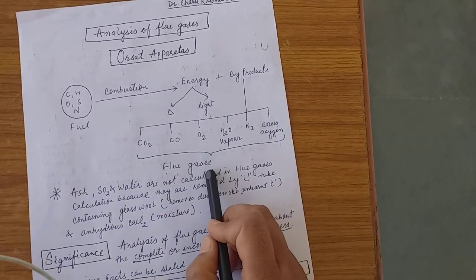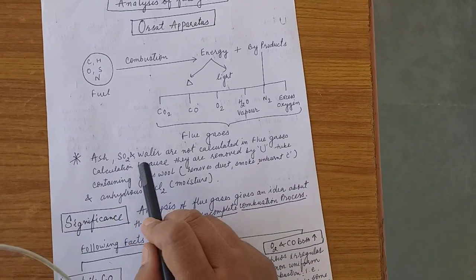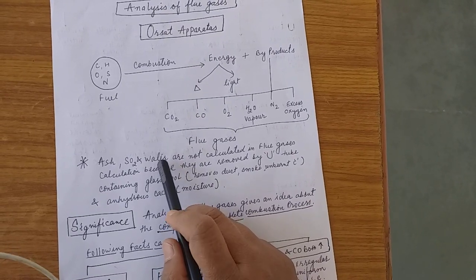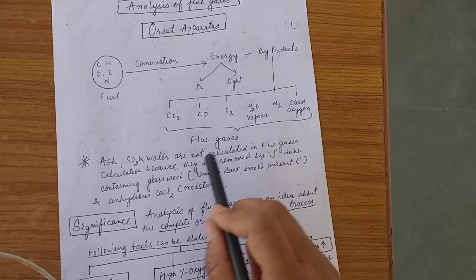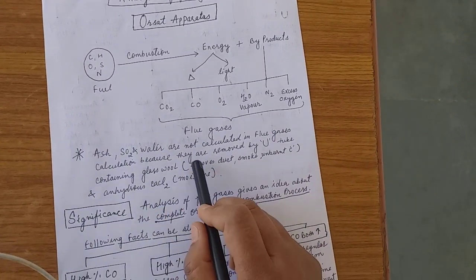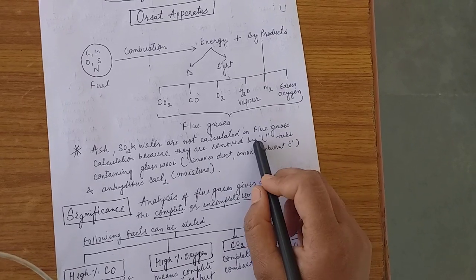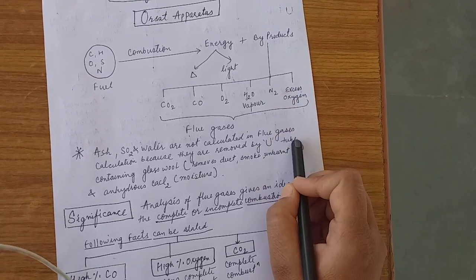Oxygen may be O2 and may be excess oxygen is also there, water vapor and nitrogen. These are considered as flue gases. Some amount of ash, sulfur dioxide, and water are also formed here, but they are not calculated in flue gases calculations because they are absorbed and removed by U-tube which is present at the starting point of apparatus.